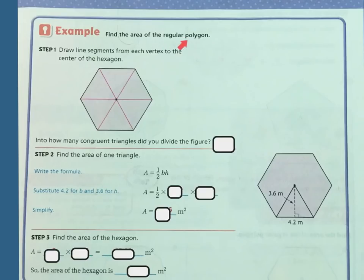Okay, example: find the area again of a regular polygon. So first they draw the line segments from each vertex to the center. So just like before, I'm going to have triangles, and into how many congruent triangles did I divide it into? Oh this one's six. Sorry, my bad. Let me count these: one, two, three, four, five, six. So this one has six.